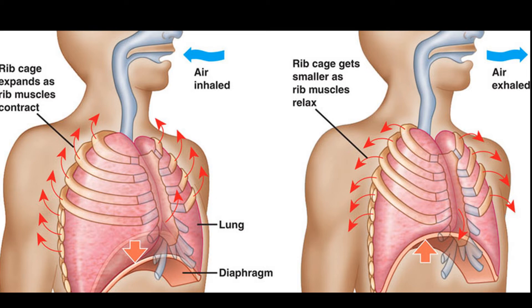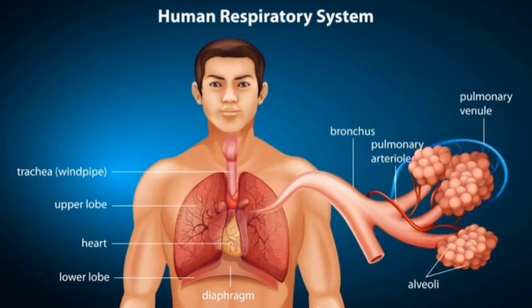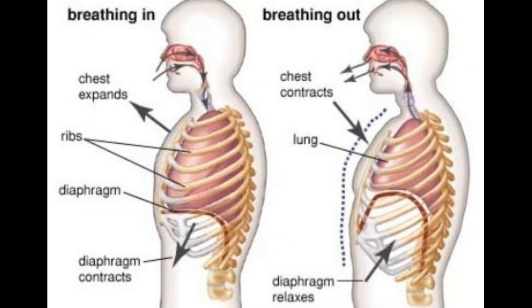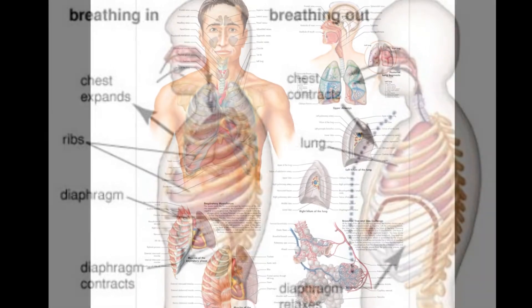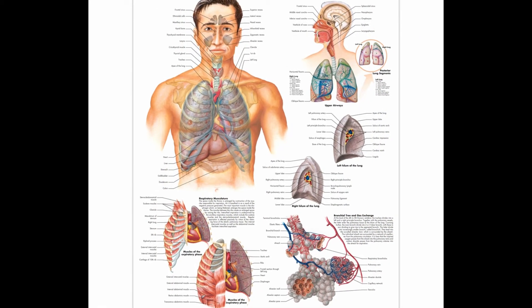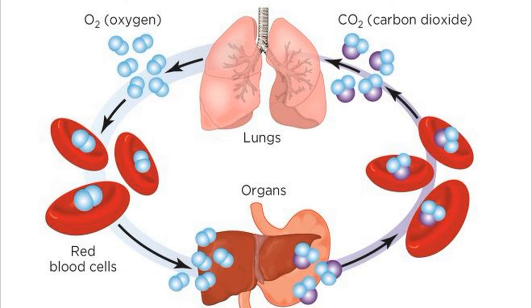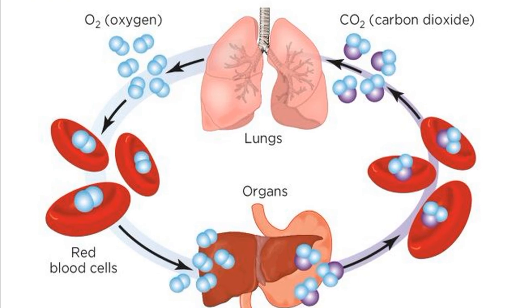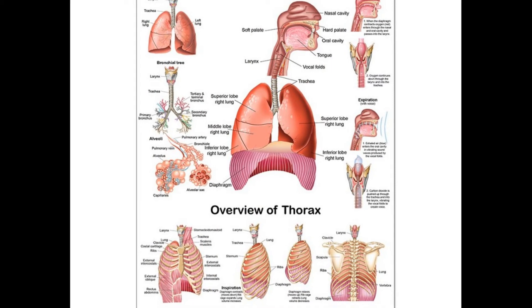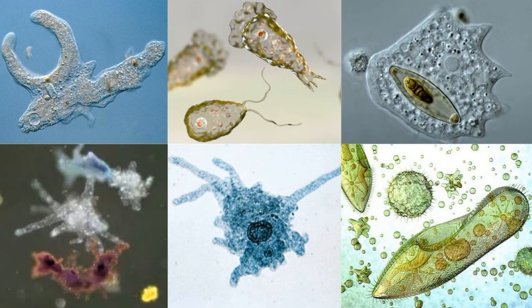Breathing and Respiration. Breathing is a physical or mechanical process of inhaling and exhaling respiratory gases. An organism must possess organs or apparatus such as gills or lungs for breathing. Respiration is a chemical process in which gaseous exchange takes place across the cell membrane and complex carbohydrates are broken up with the help of enzymes to liberate carbon dioxide, water vapour and energy. No apparatus is needed — even a single-celled amoeba respires.